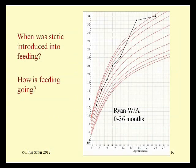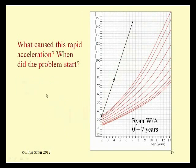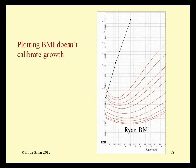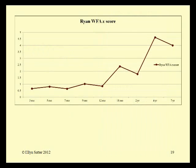Here's Ryan. When was static introduced into Ryan's feeding? He suddenly took off from his growth curve and then really took off between two and seven years. When did the problem start? Plotting as BMI doesn't calibrate growth, but plotting a Z-score does help. He worked along at about the 75th to 85th percentile during his first 12 months. Then he had a sudden acceleration between 12 and 18 months, and another big leap between two and four years. Once you start seeing acceleration, it has a tendency to keep going.